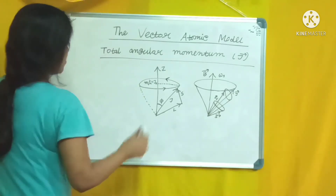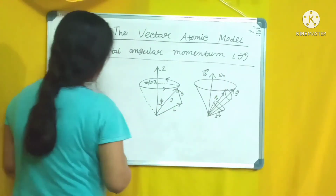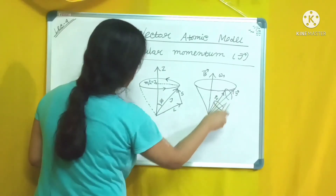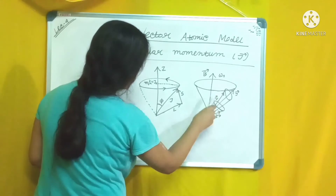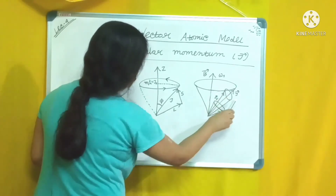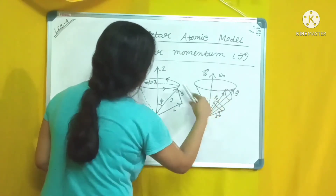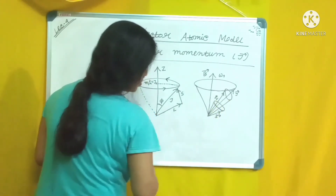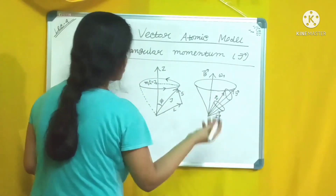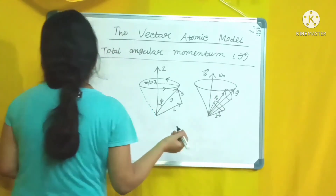From the diagram it can be understood clearly: J precesses around B, and L and S precess around J. So whenever J precesses around B, L and S also precess around J in this fashion.